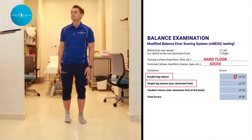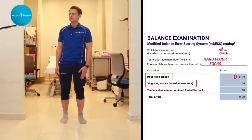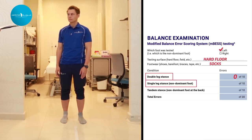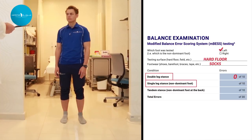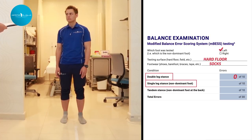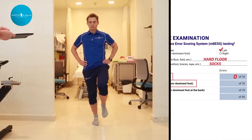The second balance test is the single leg stance. The athlete is asked which foot he would use to kick a ball — that is the dominant foot. He stands on the non-dominant foot (right), while the dominant leg is held in approximately 30 degrees of hip flexion and 45 degrees of knee flexion. Eyes closed, maintaining stability for 20 seconds. If the athlete stumbles, he opens his eyes, returns to start position, and continues balancing.